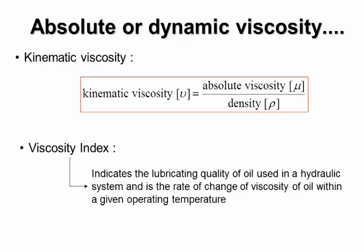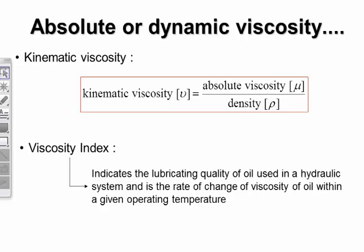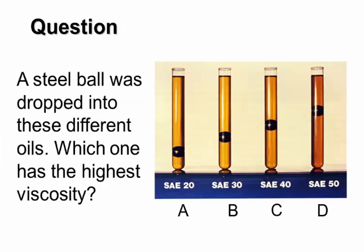Kinematic viscosity equals absolute viscosity divided by density. The symbol for kinematic viscosity is mu, so: mu equals absolute viscosity divided by density. The viscosity index indicates the lubrication quality of oil used in a hydraulic system — it is the rate of change of viscosity of oil within a given operating temperature range.